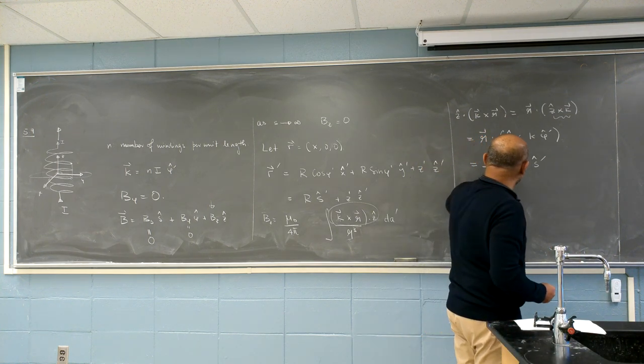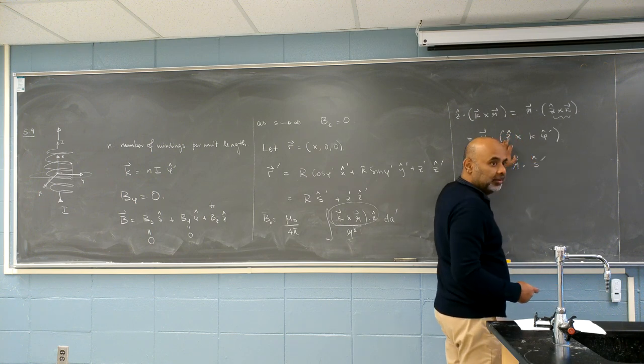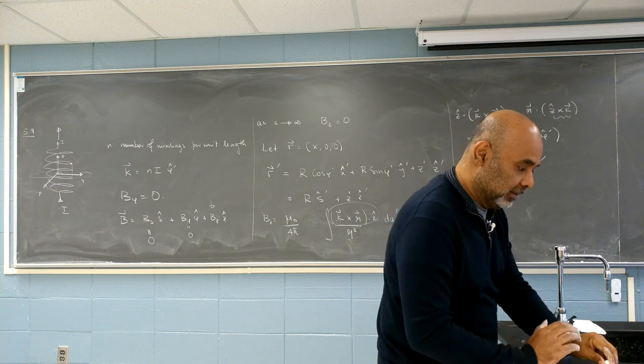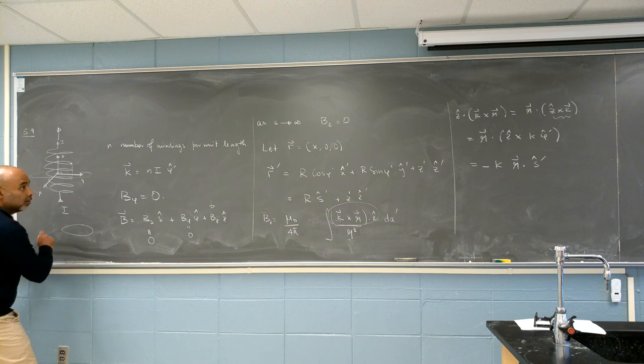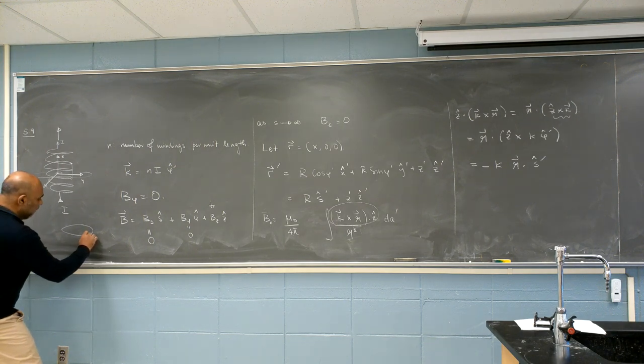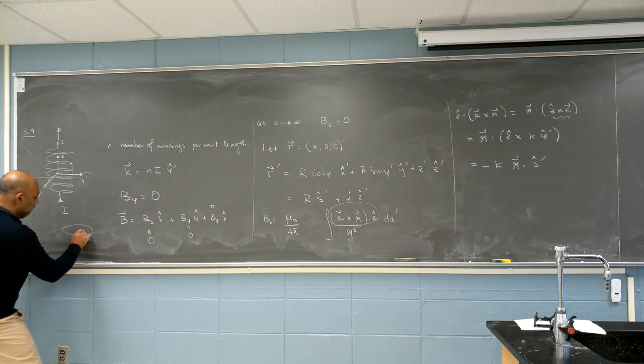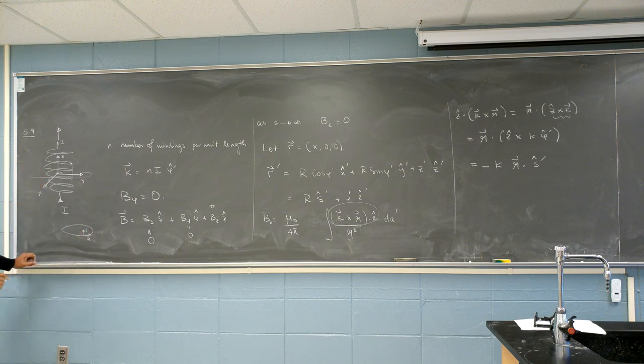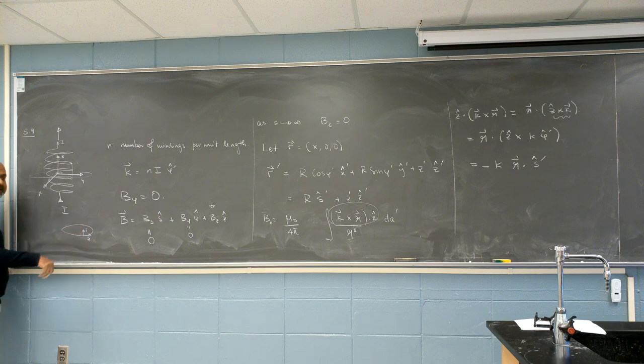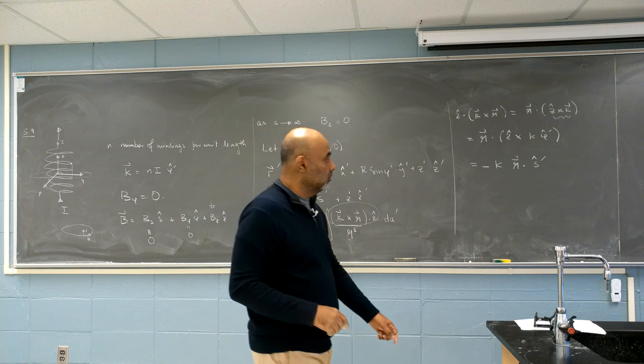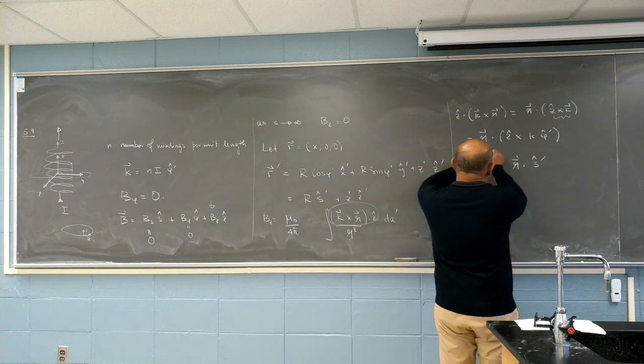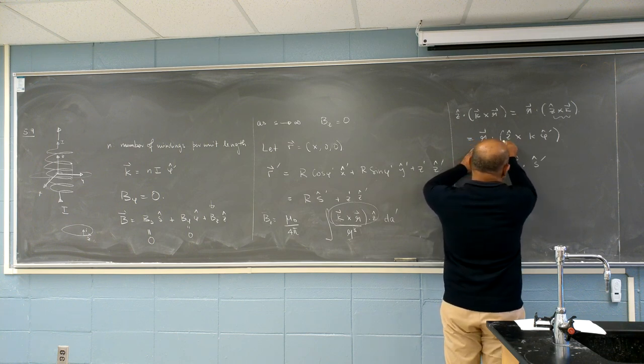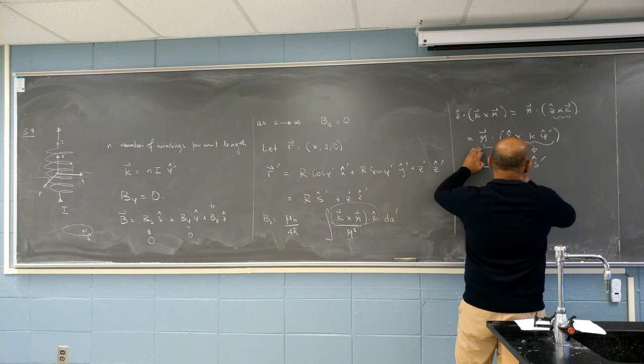Z is a Cartesian unit vector. So it doesn't depend on location. Phi is not a Cartesian unit vector. So phi hat, over here, it points this way. Over here it points this way. But Z, everywhere it points the same way. So I can compute this very easy. I can compute. So what is Z hat? This is phi hat. This is Z hat. So what is Z hat cross phi hat? Minus S hat.